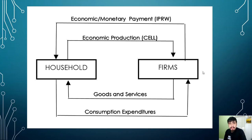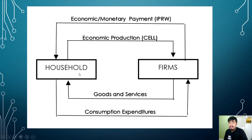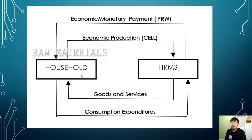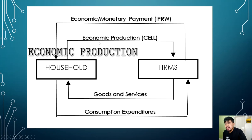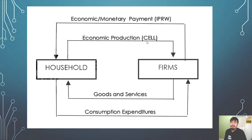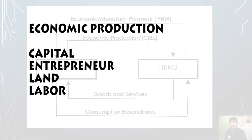Going back to our definition of economics — household management — we have to look at the household first. What the household has would be your raw materials. These raw materials are the essential things that stimulate our economy, our market. The appropriate term for what the household provides is economic production, or CELL — which stands for Capital, Entrepreneur, Land, and Labor.